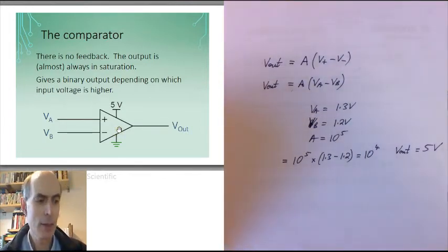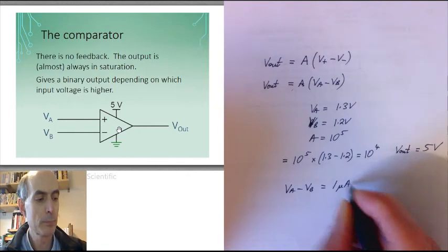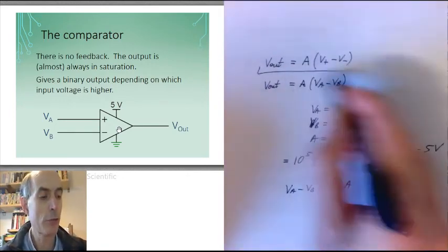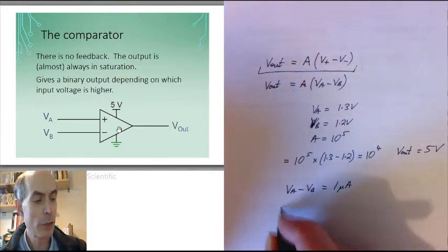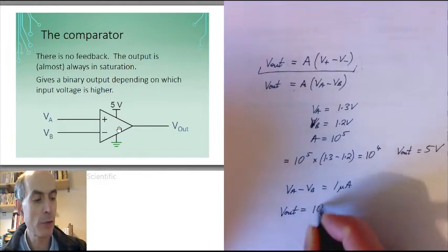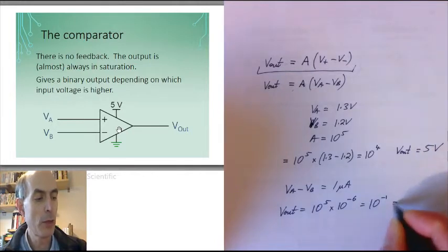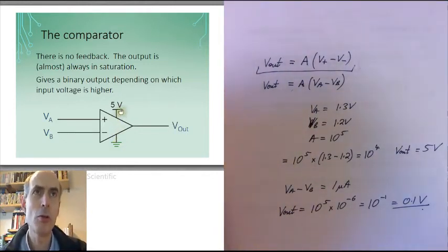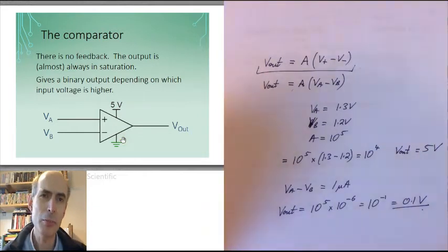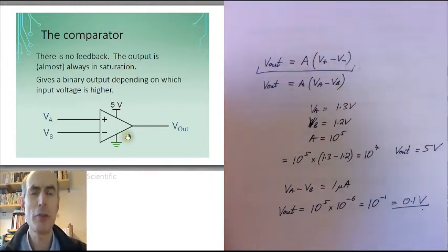But if it isn't, if, say, VA minus VB was 1 microvolt, then the equation here, the characteristic of our op-amp with an open-loop gain of 100,000, would give me that Vout equals 10 to the power of 5 times 10 to the power of minus 6, 10 to the power of minus 1, 0.1 volts. That is neither the minimum possible output nor the maximum output. That is somewhere in between, and an ideal comparator would never give you that in-between value. That's one of the issues with this very simple form of comparator.